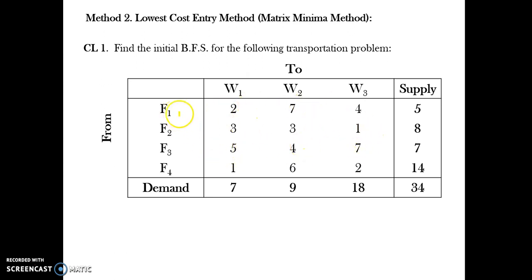This means that if I am shipping one unit of the particular product from factory F1 to market W1, my cost is 2 rupees. You can multiply it by ten, hundred, thousand, or lakhs depending on how big your transmission route is, and you can scale it by dividing by a common factor.